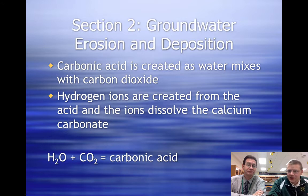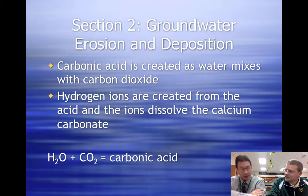So what happens for the erosion part is that we can get carbonic acid. And where does carbonic acid come from? Carbonic acid is a natural byproduct of rainwater. Rainwater, when it falls through the air, picks up carbon dioxide in the air, it mixes with the H₂O and you get carbonic acid.